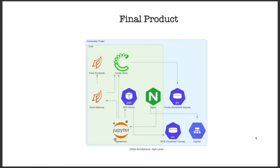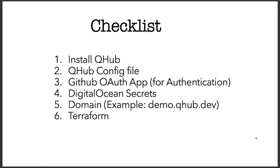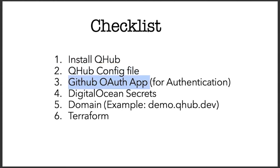This is how the file is going to look like. Let's take a quick look at a checklist of all the things you're going to need. You need to install QHub — you can do it via pip or install it from GitHub. You need a QHub config file, which is the source of truth for all of your infrastructure. You will need a GitHub OAuth application for authentication, DigitalOcean secrets for deploying on DigitalOcean, a domain for hosting QHub, and a token for deploying the infrastructure.